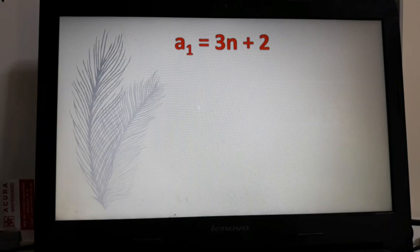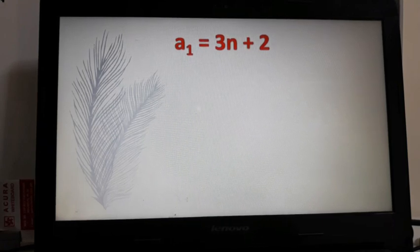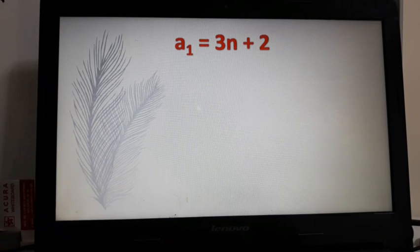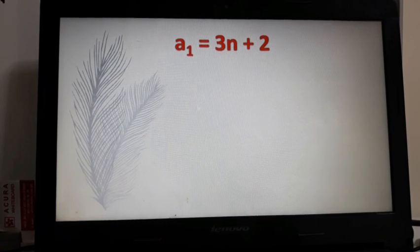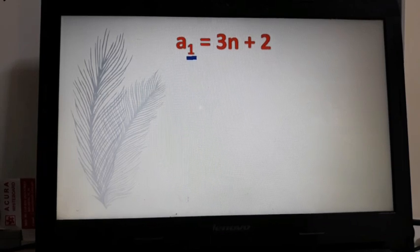So let's look first for the first term. If you notice, the formula earlier is a_n equals 3n plus 2. Since we are looking for the first term, the n will be replaced by 1.